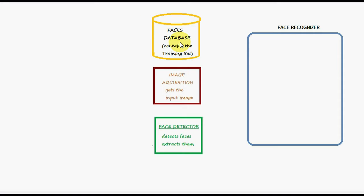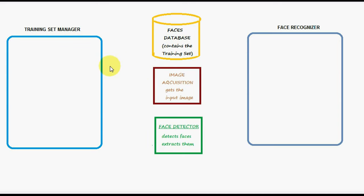So if we need to collect the faces, we will need to take the image, extract the faces, add a label or name to them, add them to the database, and update names and related information. We will have to do a lot of work managing the training set. That means we need a component to do this job for us — to maintain the training set. Let's call it a training set manager. The training set manager is the component that is going to help make and maintain a training set — a faces database.